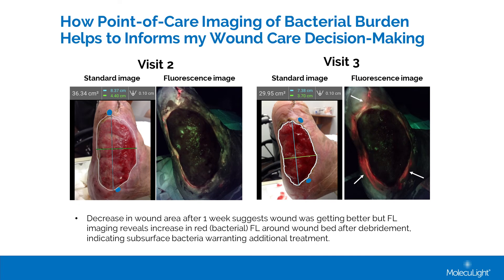Fluorescent imaging informs my wound care practice. As you can see in the images depicted below, on the left the patient's wound measuring 36.34 square centimeters had red fluorescing bacteria on both the superior and inferior aspects of the wound. When the patient underwent surgical debridement, the following week you could see a reduction of wound size by six square centimeters and decreased fluorescent bacteria at the superior aspect. However, he was showing more bacteria at the inferior plantar and lateral aspects, which indicated he needed additional surgical debridement and exudative management.